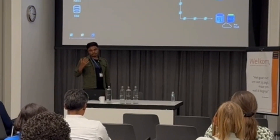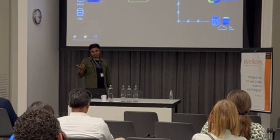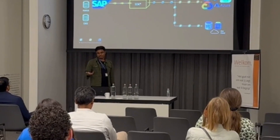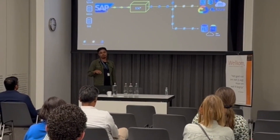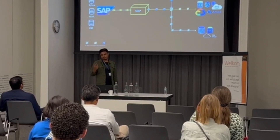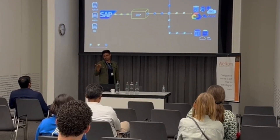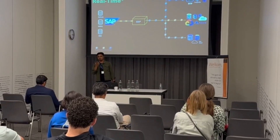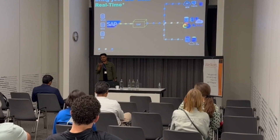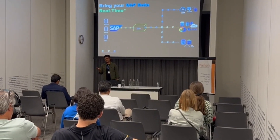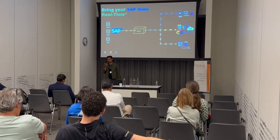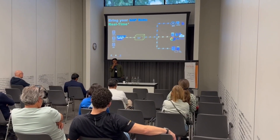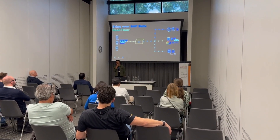When we say target cloud databases, we are not ignoring BTP either. Within BTP, you can push data to HANA Cloud, or you can also push the data in real time to Postgres within BTP. Imagine when you are building a side-by-side or extension application — be it on BTP, AWS, Azure — and you are building the extension application on top of HANA Cloud.